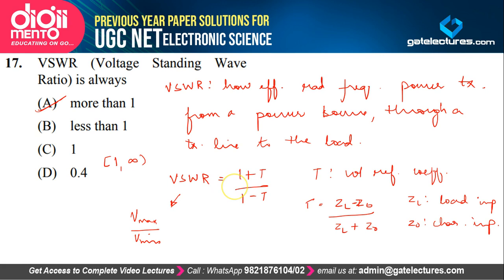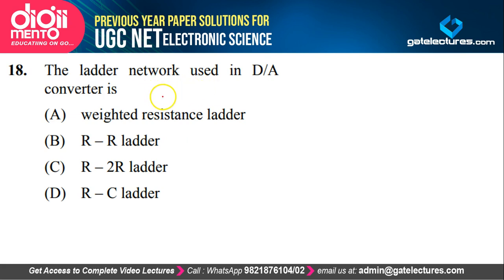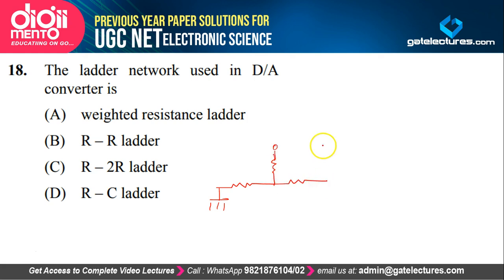This is how we calculate VSWR. Now look at the next question. They are asking about the ladder network used in a DA converter. We use either a weighted resistance ladder or an R2R ladder. The R2R ladder looks like alternating R and 2R resistors. The number of stages depends on the number of bits to convert.